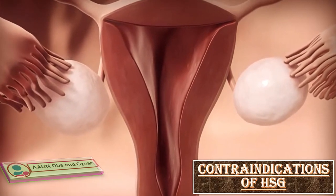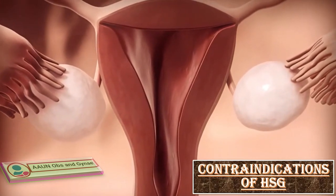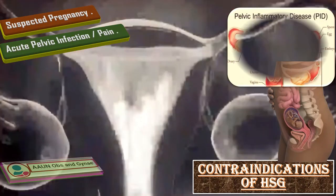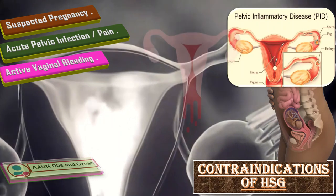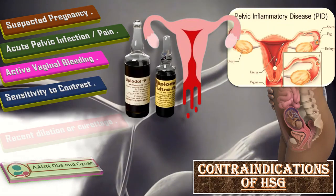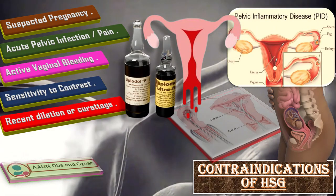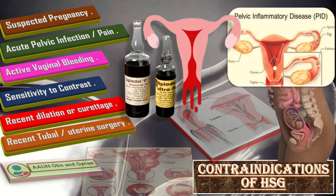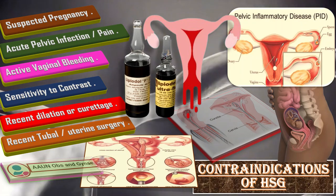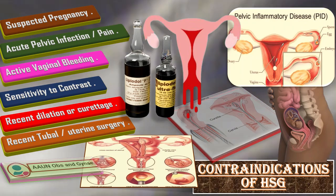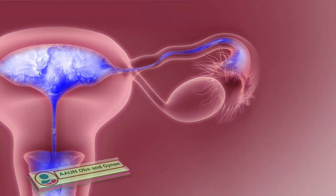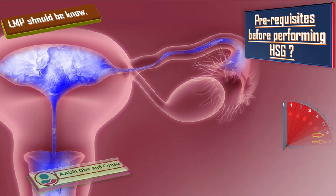Before explaining the procedure, I will talk about the contraindications of HSG, which include: first, suspected pregnancy; second, acute pelvic infection or pelvic pain; third, active vaginal bleeding; fourth, sensitivity to contrast; fifth, recent dilation or curettage; and sixth, recent tubal or uterine surgery — by recent we mean within the last six weeks.